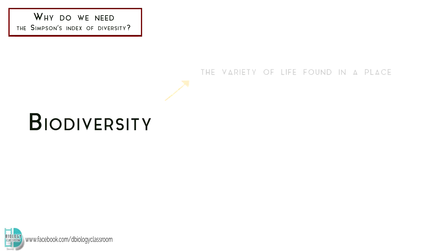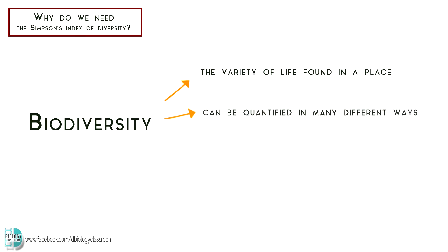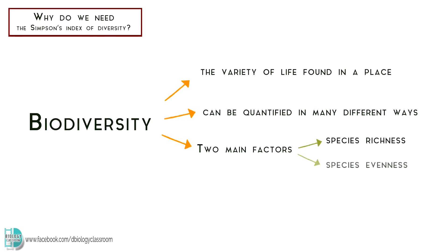Biodiversity is defined as the variety of life found in a place. It can be quantified in many different ways, but there are two main factors that are usually taken into account when measuring diversity: species richness and species evenness.